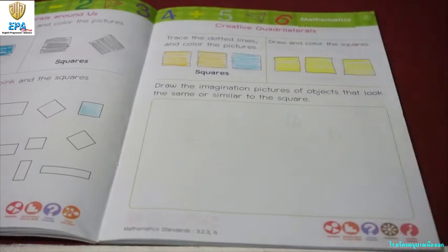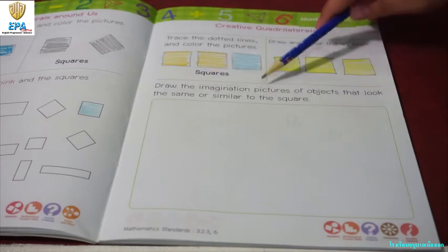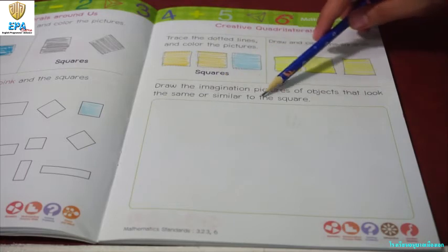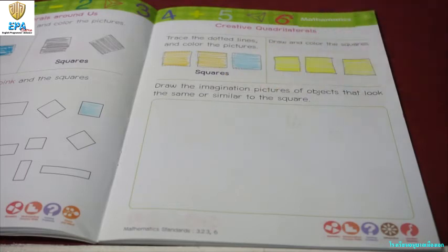Okay, next. The last activity that we have, draw the imagination pictures of objects that look different. Is it the same or is similar to the square? So, is a book square? Yes or no?